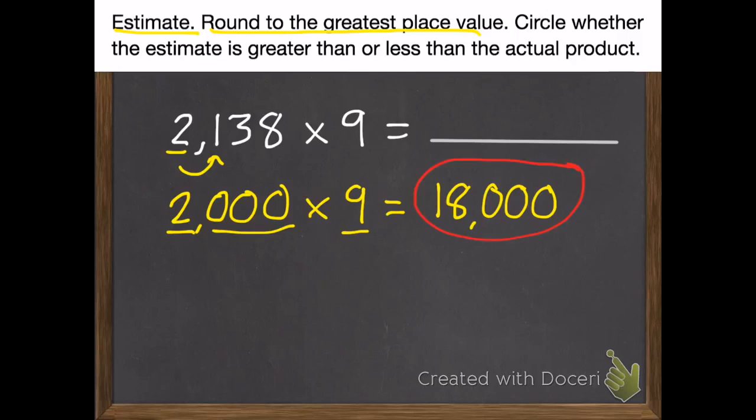Now I need to decide if my estimate is greater than or less than the actual product. Well, the actual number is 2,138 and I rounded that down to 2,000, which means my estimate is going to be a little bit less than the actual product.